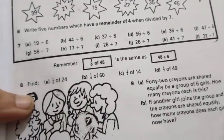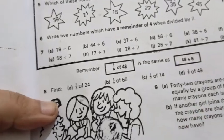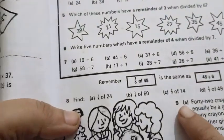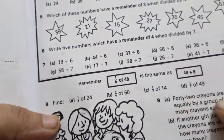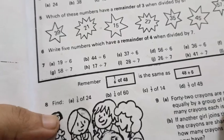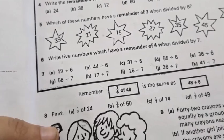Start from question number 9. It is a word problem, so you have to read the question carefully then give its answer. Part A: 42 crayons are shared equally by a group of 6 girls, how many crayons each?